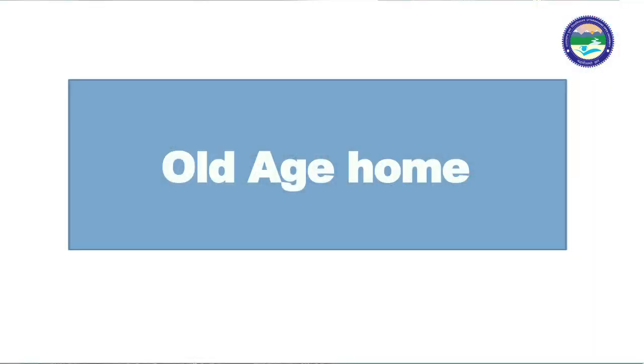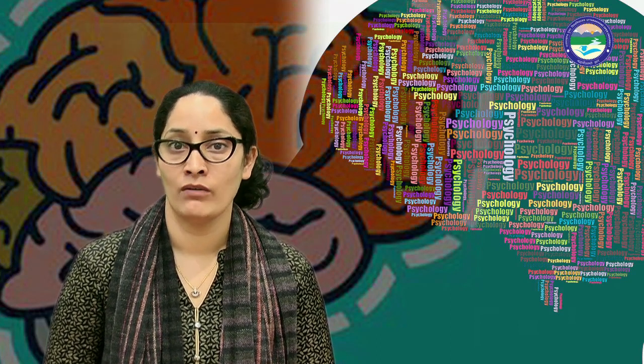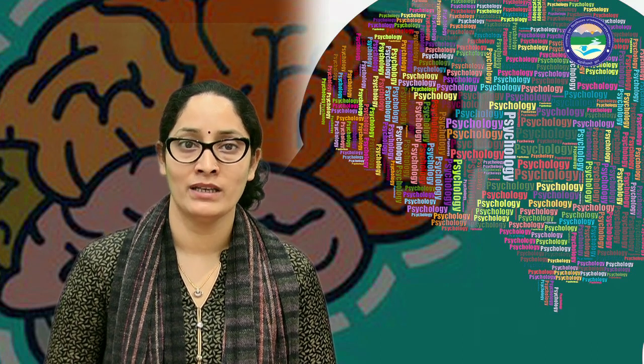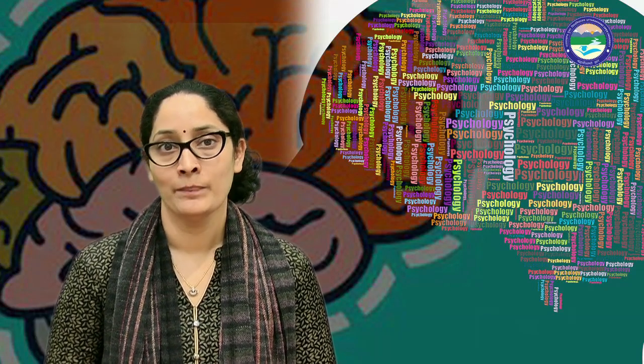Clinical psychology का उपयोग old age homes में भी किया जाता है। ज़्यादातर देखा गया है कि 60 years से ऊपर के लोगों में neurological disorder होने की संभावना अधिक होती है। एक research में पता चला है कि 6.6% से अधिक लोगों को मानसिक विकलांगता और neurological विकारों को face करना पड़ता है अपनी old age में। इसलिए किस तरीके से उन्हें ठीक किया जा सकता है और कैसे old age home में रह रहे लोग अपने environment के साथ adjust होकर अपनी life normal तरीके से जी सकते हैं — यह भी clinical psychology का एक महत्वपूर्ण क्षेत्र है।